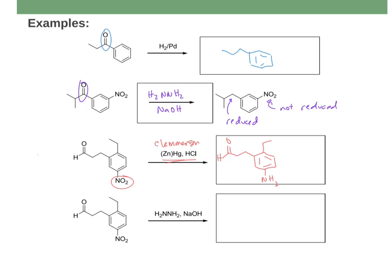For the last practice example, I have the Wolff-Kishner again — hydrazine with sodium hydroxide. This will reduce any carbonyl I have, including the non-benzylic one, but it does not affect the nitro groups, so the nitro group stays. These reducing and oxidizing agents won't necessarily affect halogens or sulfonic acids on the ring, so you don't have to worry about those as much.